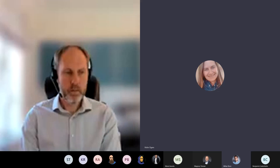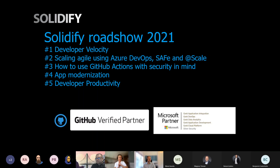We were very fresh partners of GitHub last year, so we wanted to have a number of talks specifically around the GitHub platform, but from different perspectives. So this year, we're certainly not leaving the GitHub focus, but we are widening the perspective a little bit. We have been talking about developer velocity — our own CEO Magnus Juvas did that talk. We had also Scaling Agile using Azure DevOps Safe and at Scale, and Matthias Olausson from ourselves talked about that topic.